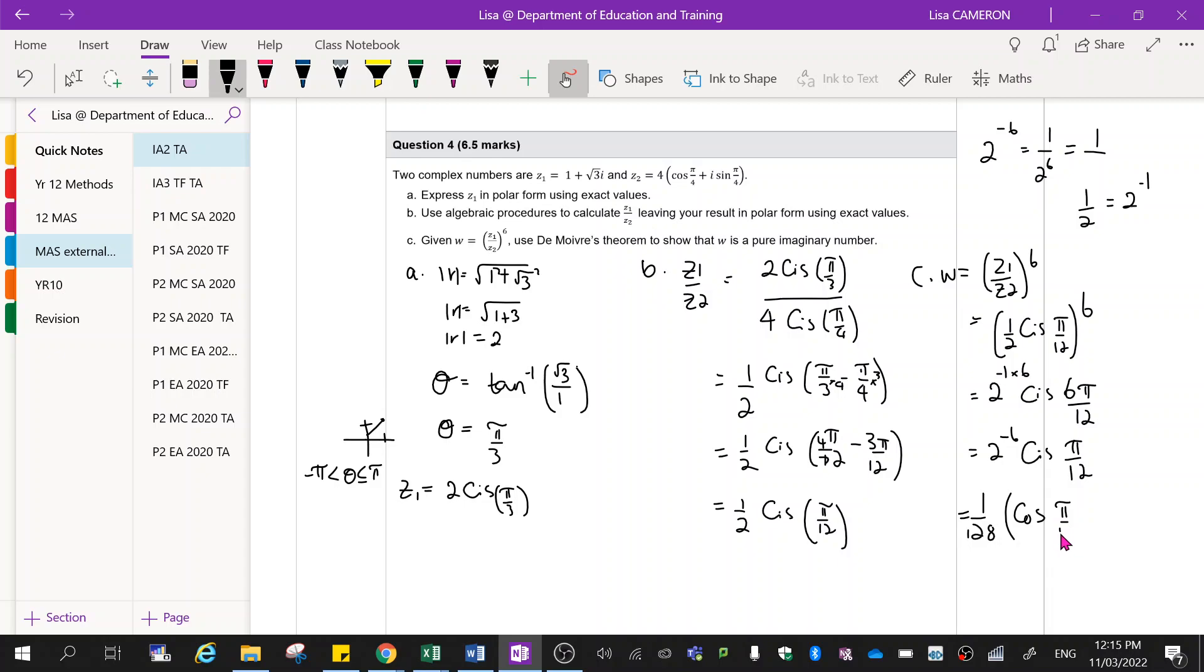Cos pi on, sorry, that will become 2 pi on 2 plus i sine pi on 2. So now we're going to recall what we know about the unit circle. Wait a minute, is that right? 2 times 2, 4. I went 1 too far. It should be 64, not 128.